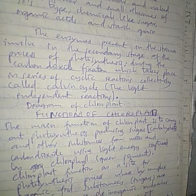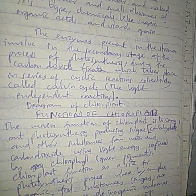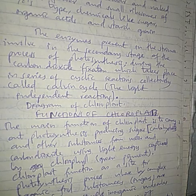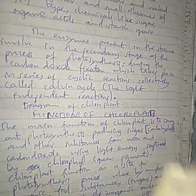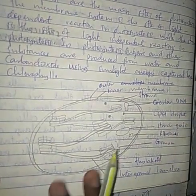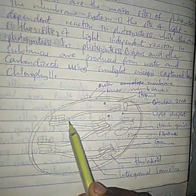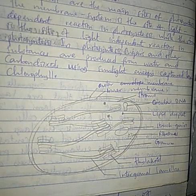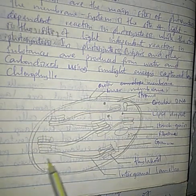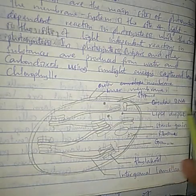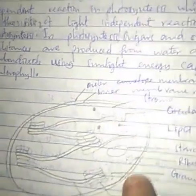Regarding the diagram of Chloroplasts: you can be asked to draw the structure. Chloroplasts look like this — you have the grana, the inter-granal lamella, thylakoids (a single membrane in a granum is called a thylakoid), lipid droplets, circular DNA, outer membrane, inner membrane, and starch granules.